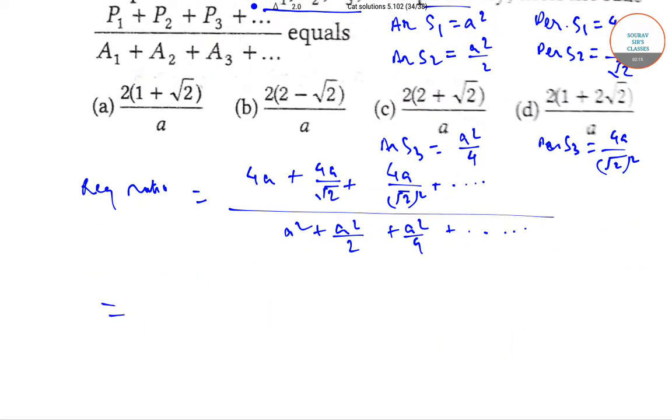That is equal to 4A by root 2 plus A squared by root 2 and so on. That is equal to 4A into 1 plus 1 by root 2 plus 1 by root 2 squared,